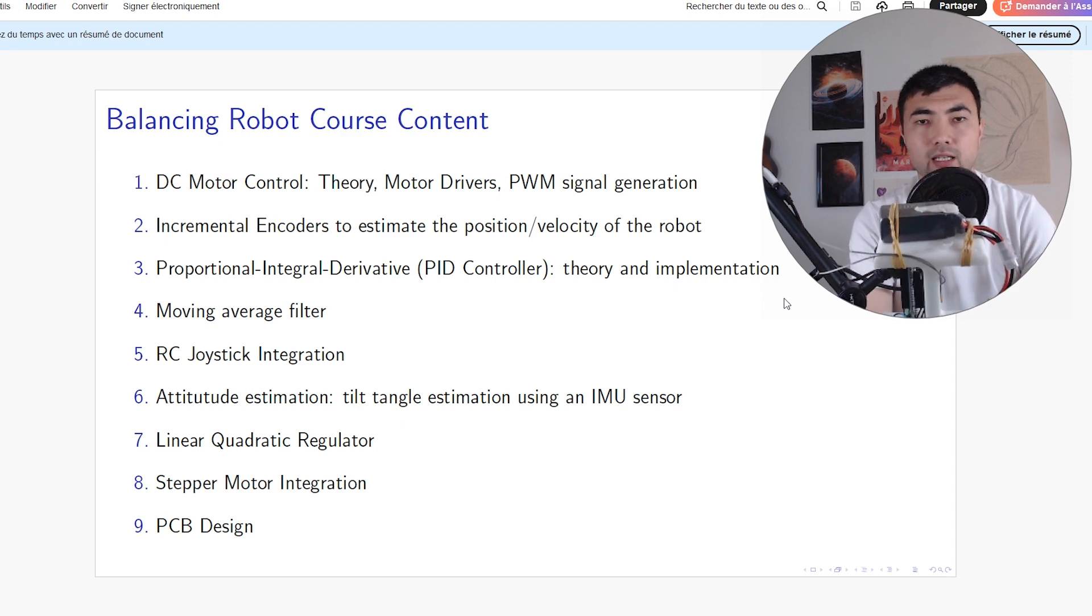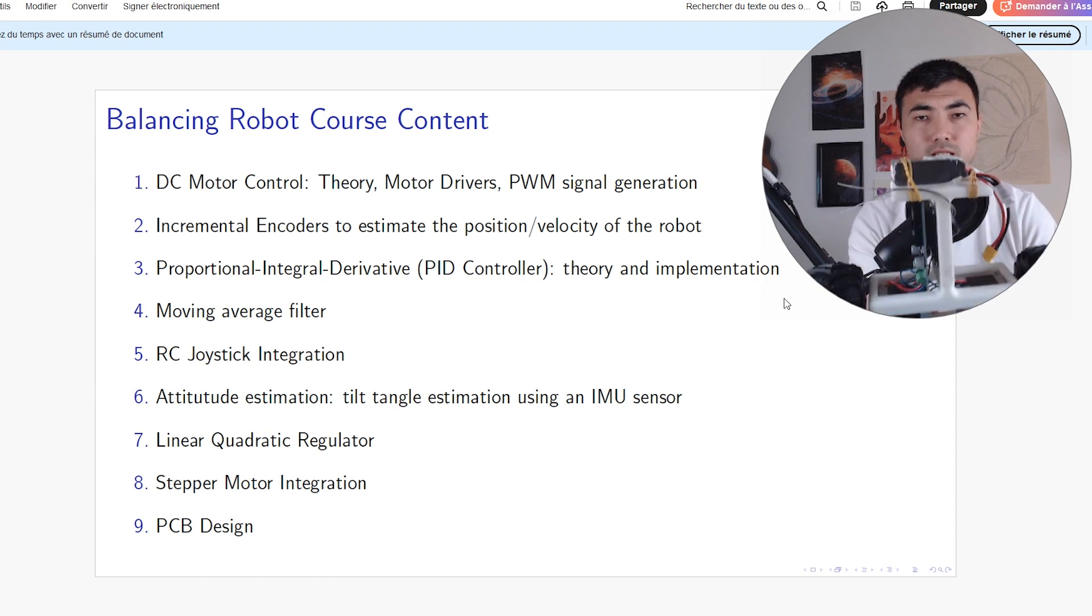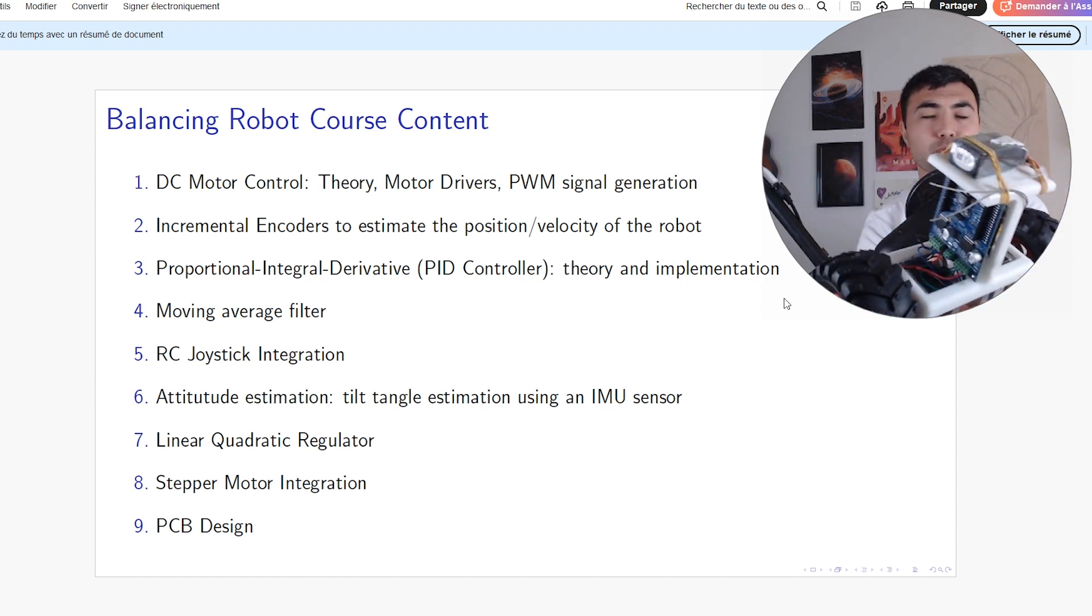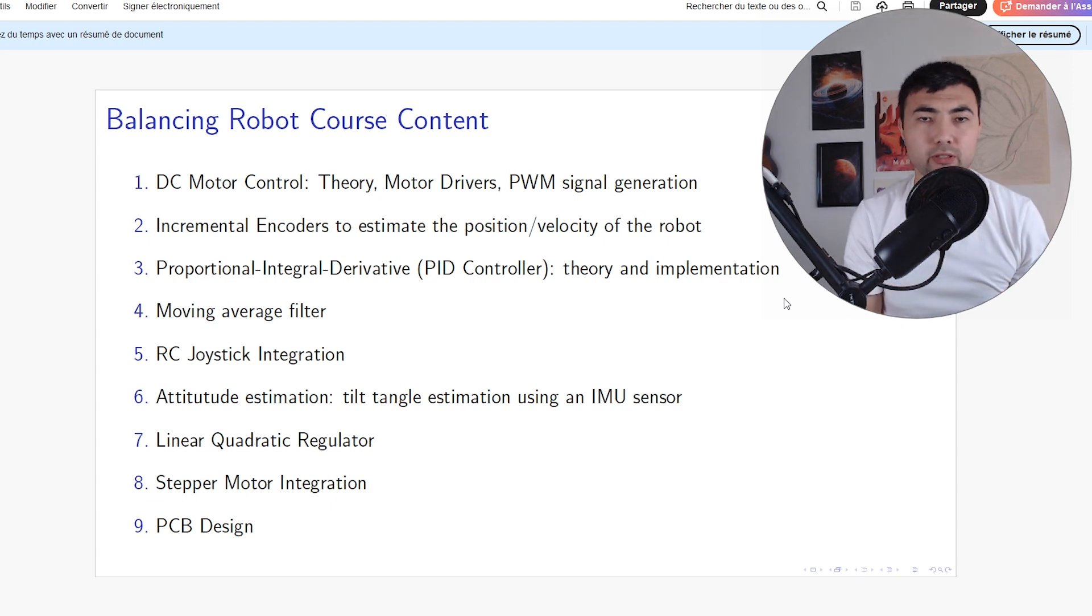The second thing is signal processing. Once you get the IMU sensor, we have to find the tilt angle, and for that we need to use different kinds of filtering—like a simple complementary filter or more advanced ones like a Kalman filter, or also a moving average filter. All these topics are really important.